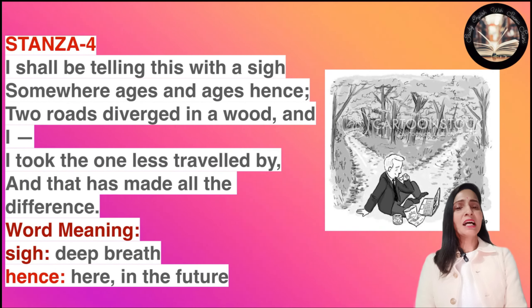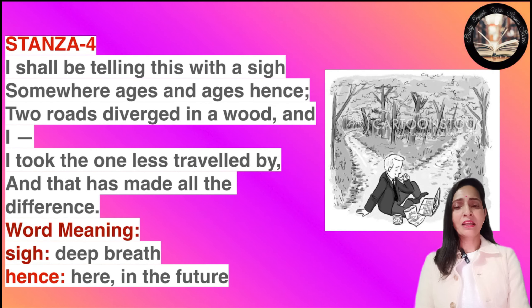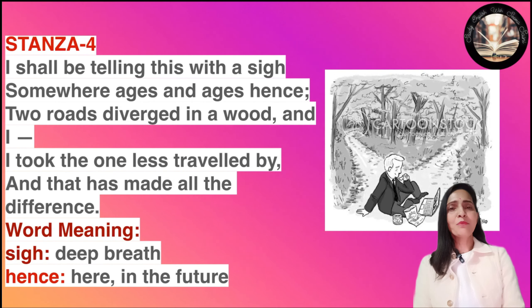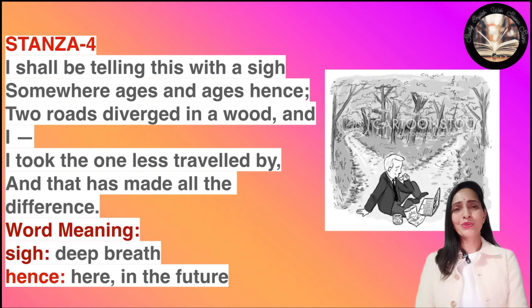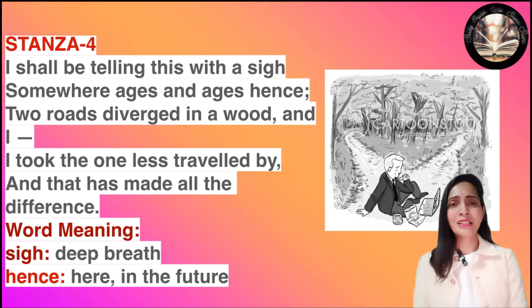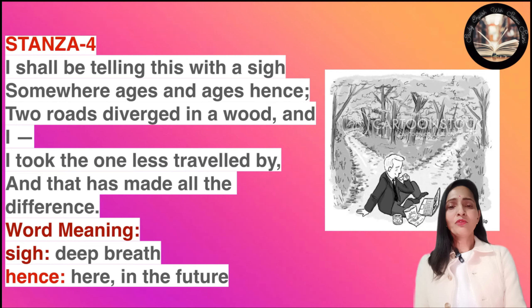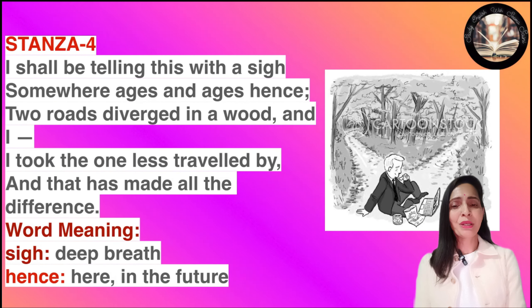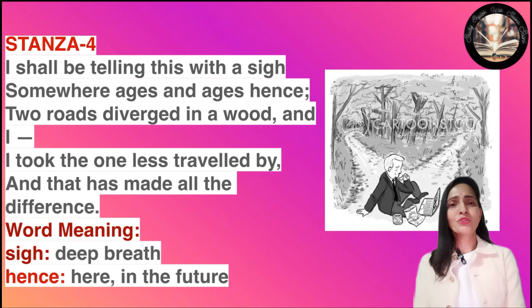Stanza number four: 'I shall be telling this with a sigh, somewhere ages and ages hence: two roads diverged in a wood, and I took the one less travelled by, and that has made all the difference.' 'Sigh' means a deep breath, and 'hence' means in the future. The poet says that in the future he will tell this story with a sigh — meaning with sadness — that two roads diverged and he could only choose one, leaving the other behind, hoping to return someday but knowing he could not.